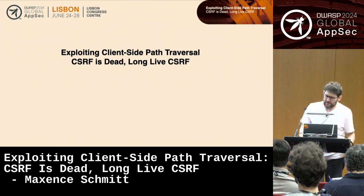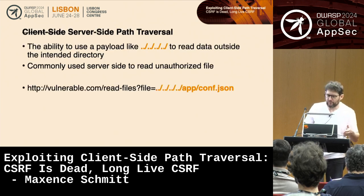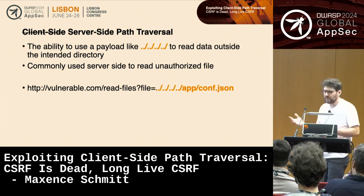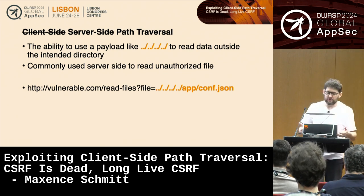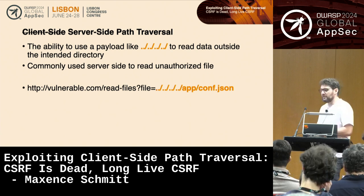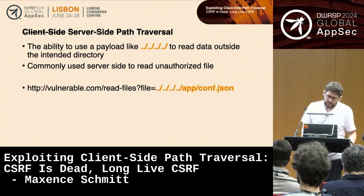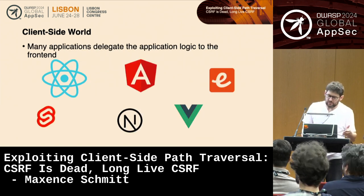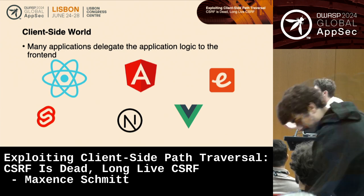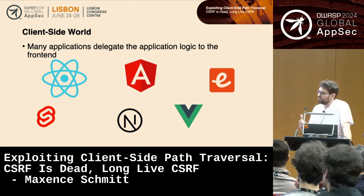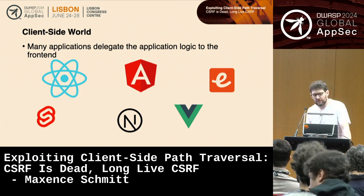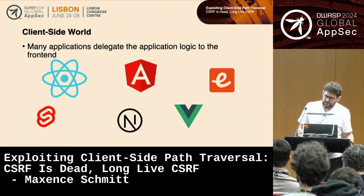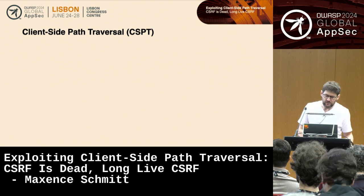Before going further, let's focus on what client-side path traversal is. Most of you know what path traversal is: the ability to use dot-dot-slash sequences to go outside the intended directory. It's well-known on the server side, mostly used to read unintended files such as config files to get secrets. But how does it apply in a client-side context? Nowadays, many applications delegate logic to the front end — React, Angular, Vue.js, and many frameworks — implementing complex logic inside the front end.